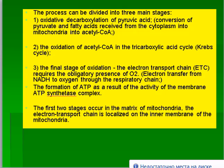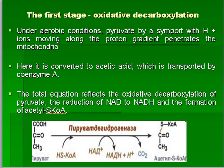The first two stages occur in the matrix of mitochondria, while the electron transport chain is localized on the inner membrane of mitochondria. In the first stage — oxidative decarboxylation — under aerobic conditions, pyruvate moves along the proton gradient and penetrates the mitochondria, where it is converted to acetic acid transferred by coenzyme A. The total equation reflects the oxidative decarboxylation of pyruvate, the reduction of NAD to NADH, and the formation of acetyl-CoA.